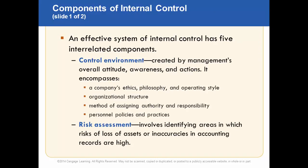Now let's look at the components of internal control. An effective internal control has five interrelated components that all go together to create one system. The first is the control environment — created by management's overall attitude, awareness, and actions. I like to think of this as management's tone from the top. If the boss leaves early and doesn't care, the staff won't either. But if the boss is ethical, holds ethics in high regard, and monitors that operating style, employees will follow suit. This also encompasses the organizational structure, authority and responsibility assignments, and personnel policies.